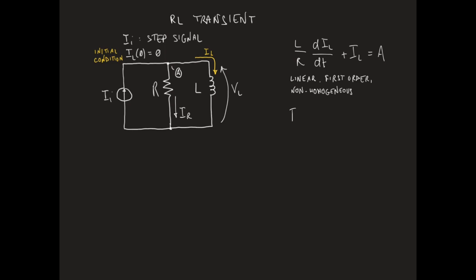The solution IL of the equation is given by the sum of a general solution of the homogeneous equation, ILH, and a particular solution of the equation, ILP. The solution of the homogeneous equation is also called the natural response of the circuit, while the particular solution is also called the forced response of the circuit.